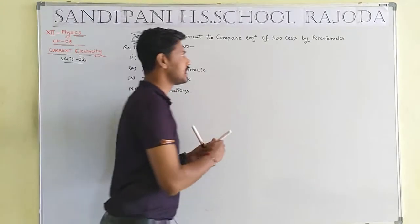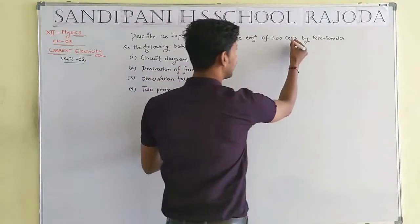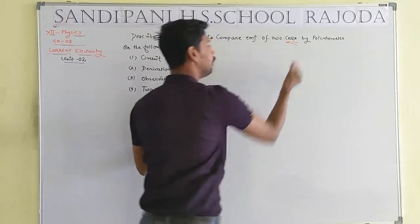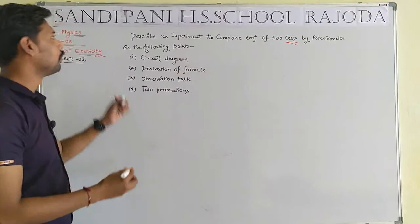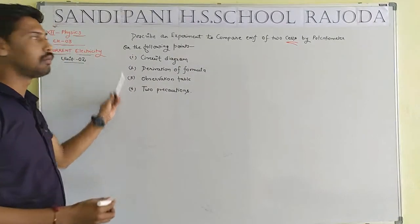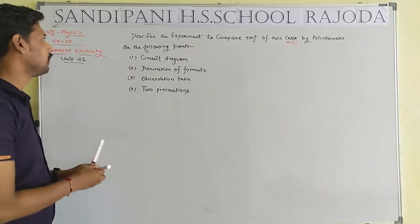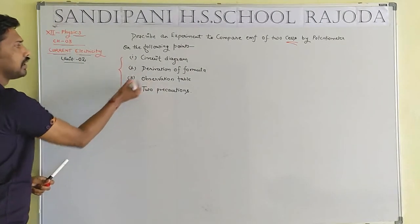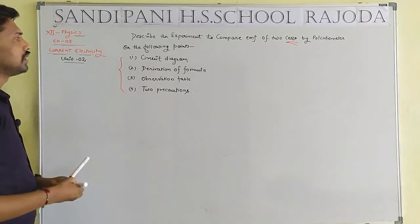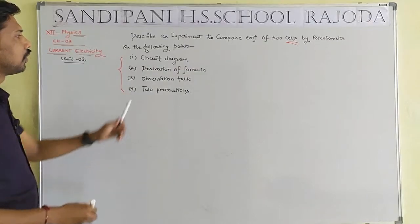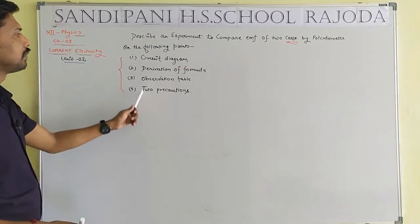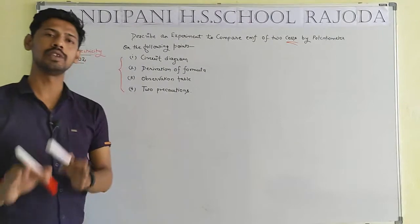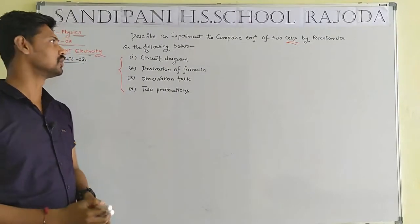What is the meaning of 'cell'? Cell means the experimental cell. By use of a potentiometer, under the following points: first, circuit diagram; second, derivation; third, observation table; and fourth, any two precautions.